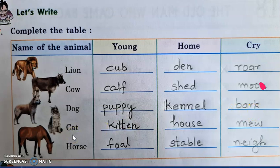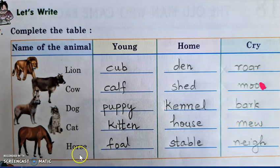Next is cat — the young one of a cat is called a kitten; the cat lives in a house; and they say meow. Next is horse — the young one of a horse is called a foal; it lives in a stable; and the sound they make is neigh.